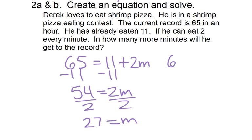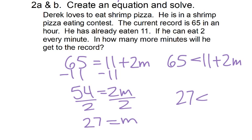Honestly, it probably would have been a better idea to use an inequality, because we wanted ours to be greater than — probably not even equal to — because we want to beat the record, not tie the record. So you would have got 27 is less than m, meaning anything above 27 minutes and he will have the record. But an equation works too — I accept both.